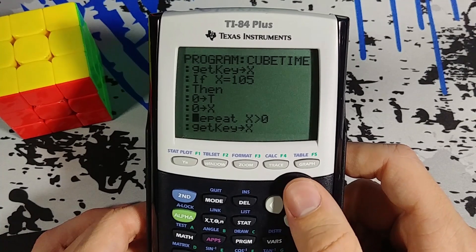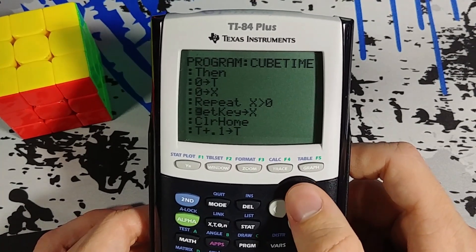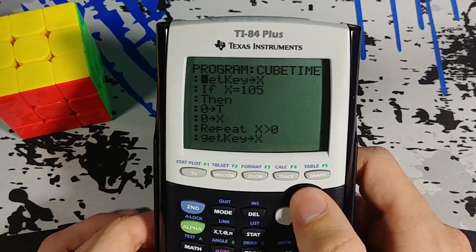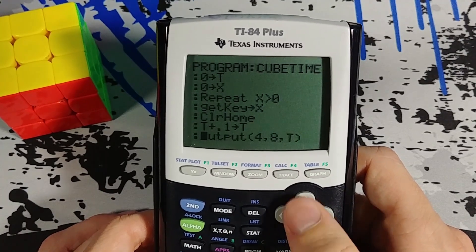So inside this if statement we have a repeating statement which is going to ask get key again. Because if I don't have get key inside this repeating statement, then this get key will be ignored. So I need to have get key a second time.